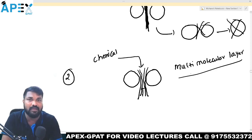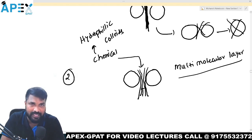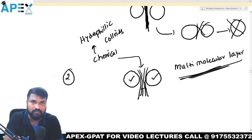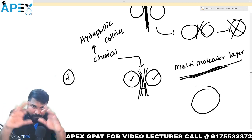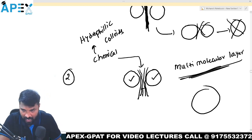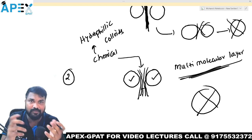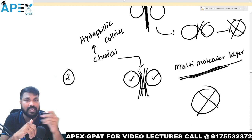What chemical forms the multi-molecular layer? The name of the chemical is hydrophilic colloids. They absorb at the interface and form a multi-molecular layer. Can this globule and that globule fuse together? Obviously no. When they don't fuse, there is no coalescence and no bigger globules, so the emulsion becomes stable.